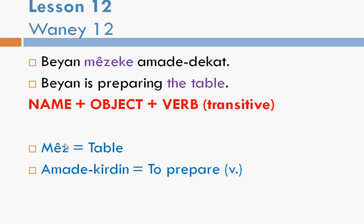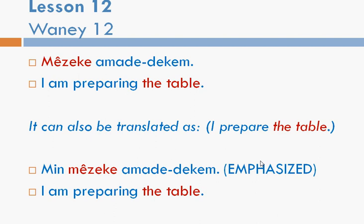Miza means table. Mizaka — since it ends in a consonant you add -aka as the definite article 'the'. And amada dakat means 'is preparing' or 'prepares', which are kind of the same in Kurdish. The base form of the verb is amada kirdin, meaning 'to prepare'. This is almost the same example, but I've used this one for one specific point.